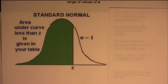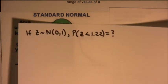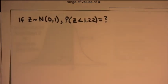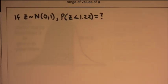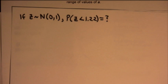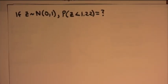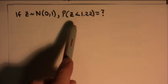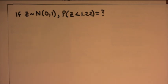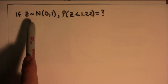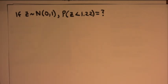How do we actually accomplish that? For example, suppose I wanted to calculate the probability that the random variable z is less than 1.22. In other words, z is a standard normal, a normal with mean 0 and standard deviation 1. How do you do that? That's where the standard normal table comes in.